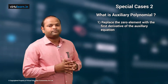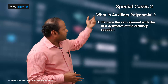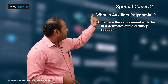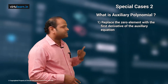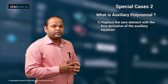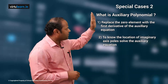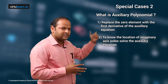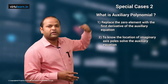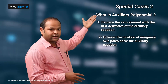Once you fill the Routh array, check the first column elements for sign changes. If all signs are positive, the system may be stable. However, before concluding, you must find the imaginary axis poles by solving the auxiliary equation, since the auxiliary equation is a part of the characteristic equation and its roots are also roots of the characteristic equation.